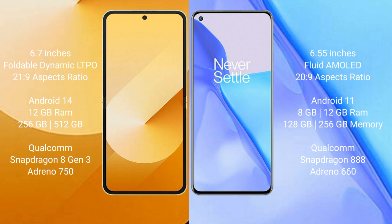Samsung Galaxy Z Flip 6 comes with 12GB RAM and 256GB internal storage, with a Qualcomm Snapdragon 8 Gen 3 processor and Adreno 750 GPU. OnePlus 9 comes with 8GB or 12GB RAM and 128GB or 256GB internal storage, with a Qualcomm Snapdragon 888 processor and Adreno 660 GPU.